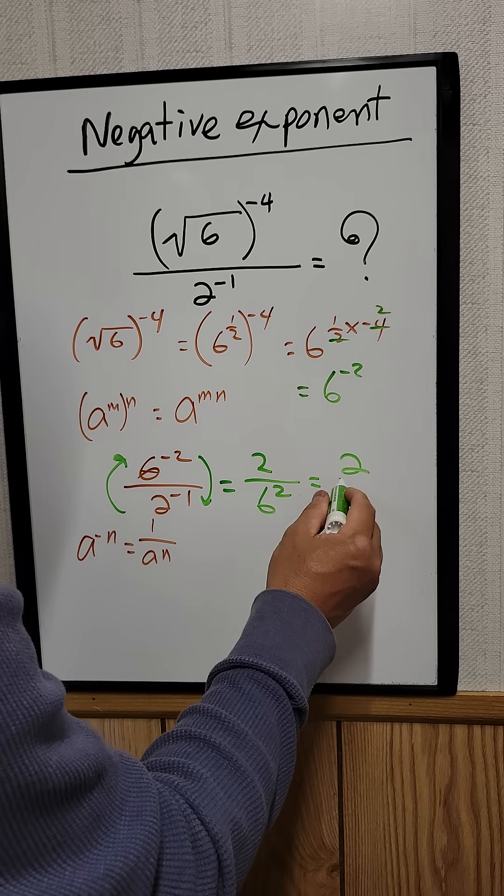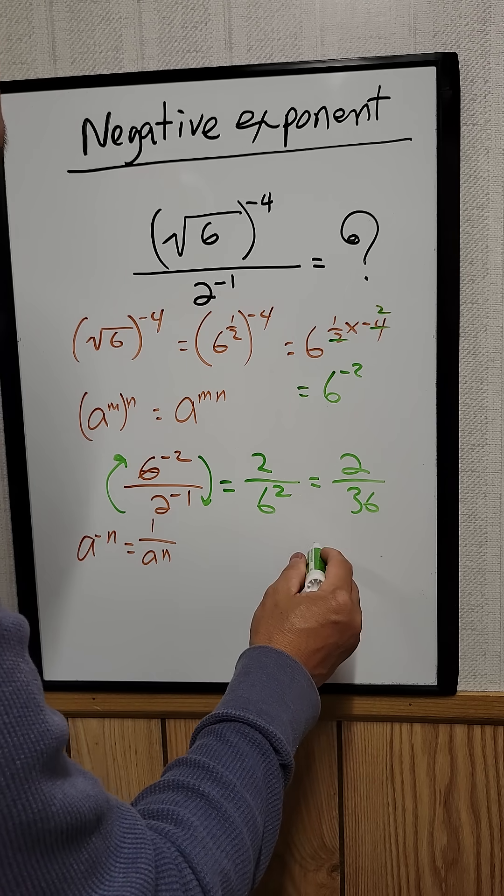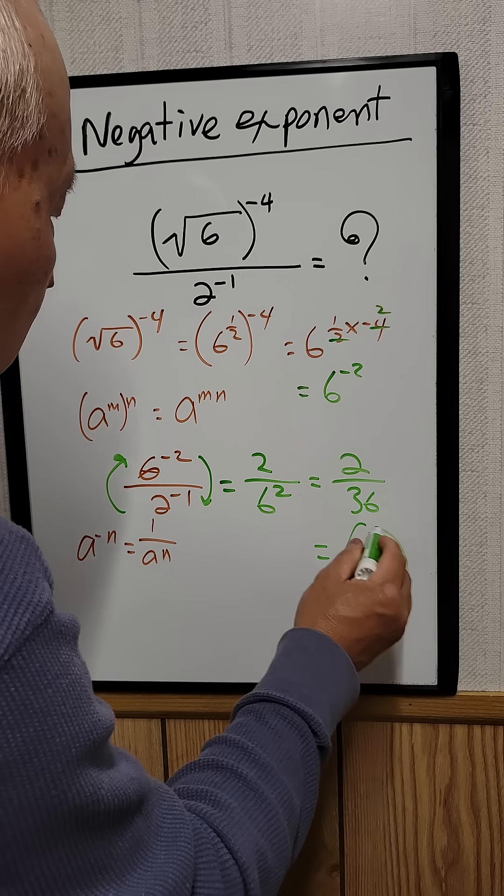So 2 divided by 6 squared would be 36. You reduce that, it's equal to 1 over 18. That's your answer.